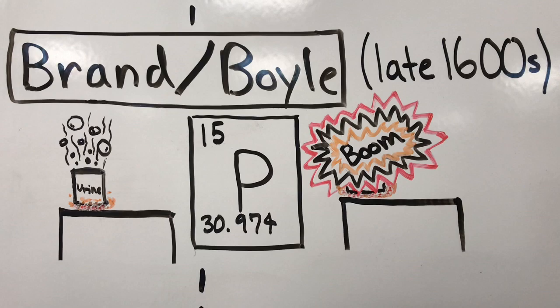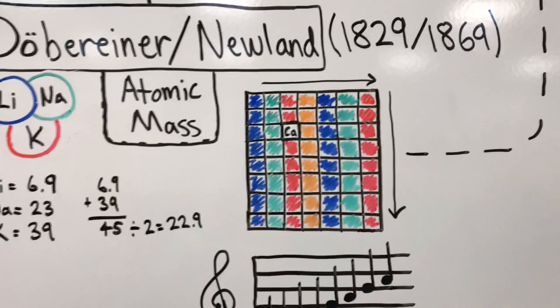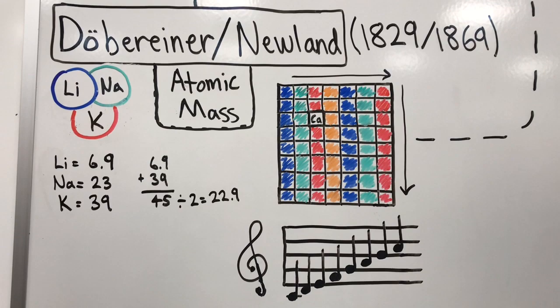With the discovery of these new elements, a new way of classifying and organizing these elements was in order. Two scientists who spearheaded this attempt at separate times were Döbereiner and Newlands.